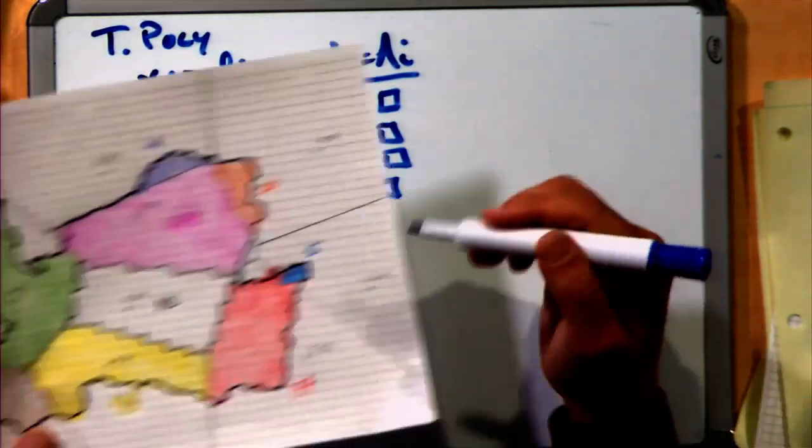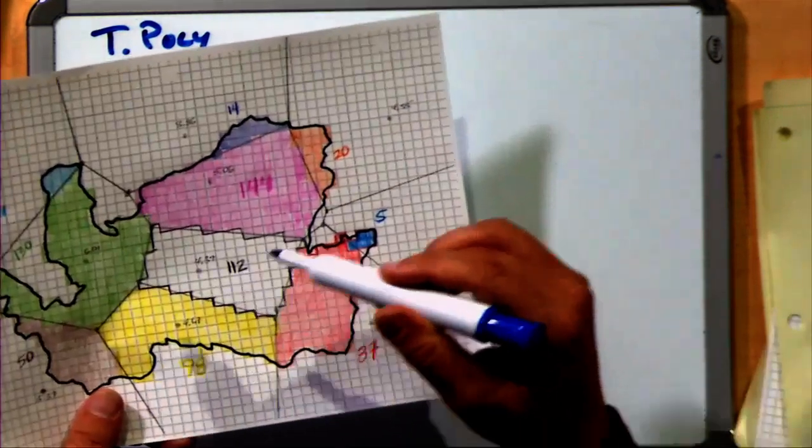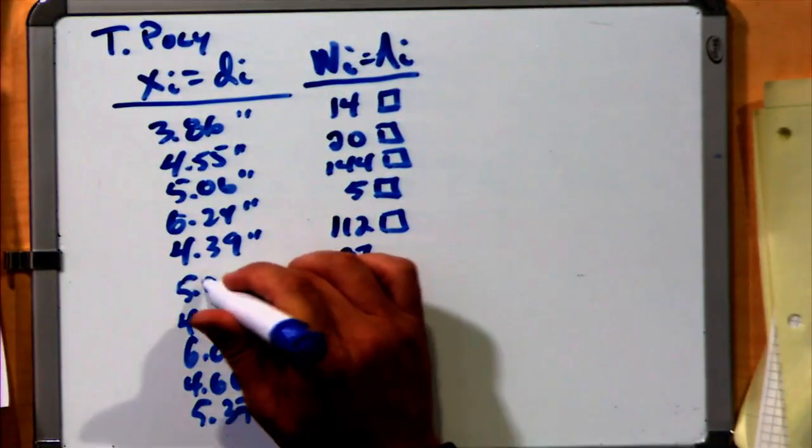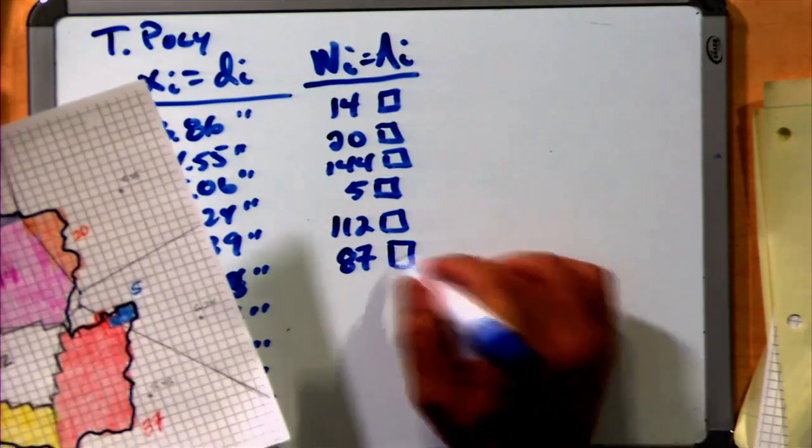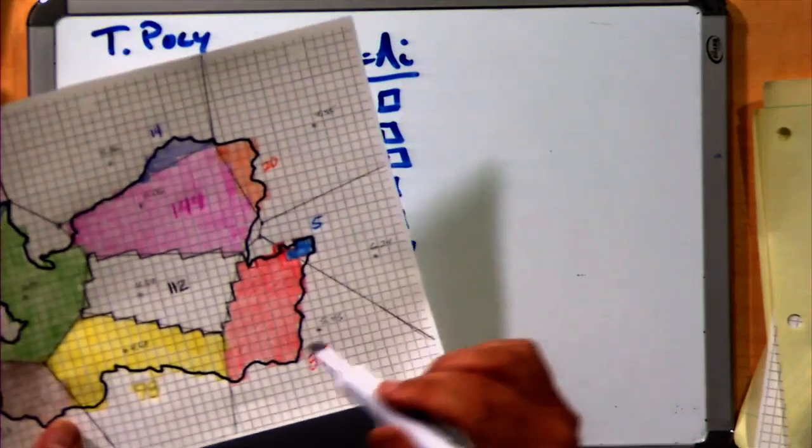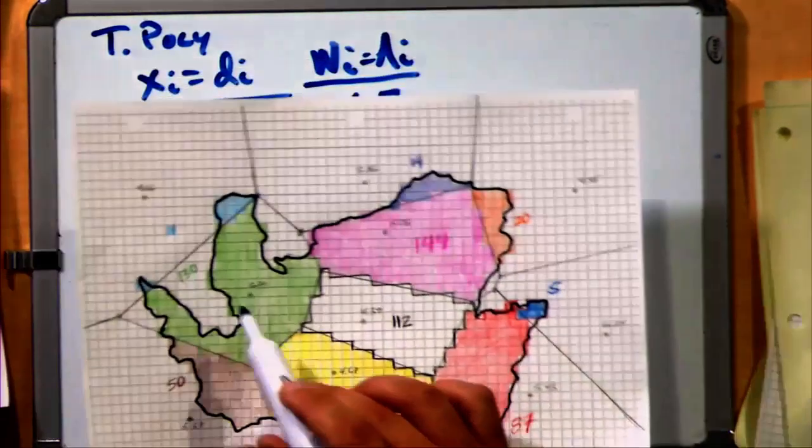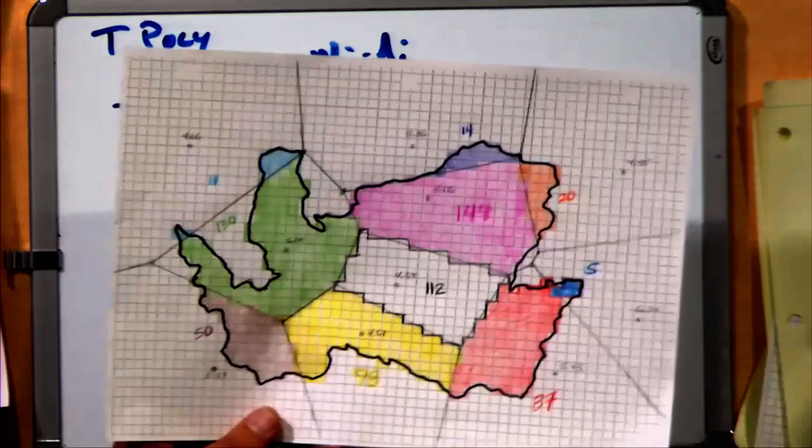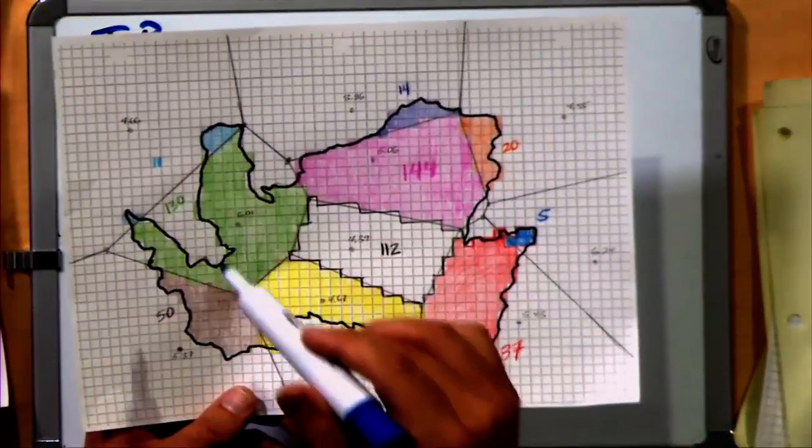I continue recording: 4.55 has 20 units, 5.06 has 144 units, and I continue making those associations: 112, 87, 98, 130, 11, and 50.